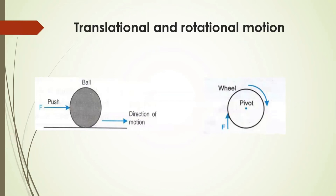First of all we will talk about what is translational motion and rotational motion. You must have read this many times — when there is a rigid body, what is a rigid body? If you apply force on that body it is not going to deform, means it is not going to change its shape or size. So when you apply a force on a rigid body which is free to move, it moves in a straight line. We call that motion as linear motion or translational motion.